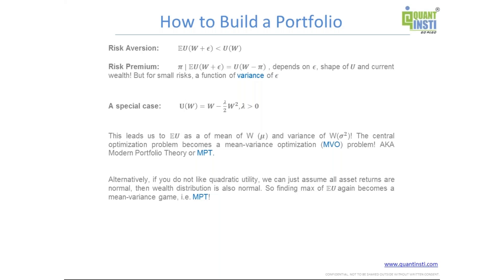Because since all the asset returns are normal, their weighted sum rather, which is the portfolio of the wealth, that will also be a normal distribution. And as you know, that normal distribution can be totally expressed in terms of its first moment, the mean and the variance. So again, optimization becomes a balance between mean and variance. And this brings us to what is known as modern portfolio theory.